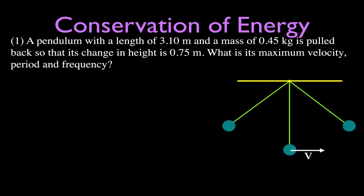We have five different problems to get through. The first one says there's a pendulum with a length of 3.10 meters and a mass of 0.45 kilograms. It's pulled back so there's a change in height of 0.75 meters. We want to know what is the maximum velocity the pendulum is going to have.